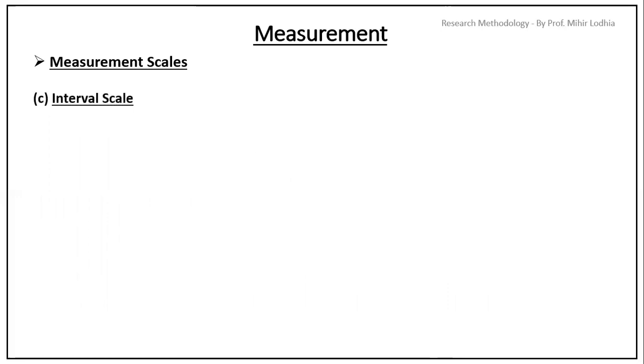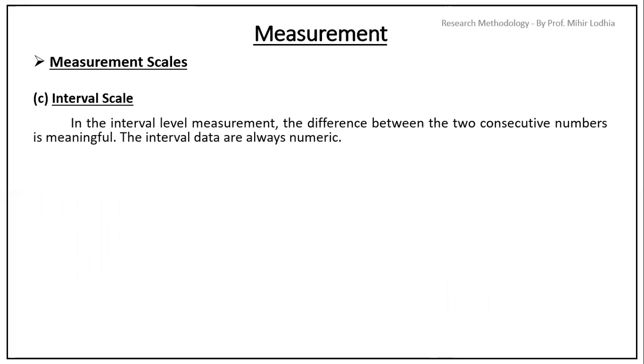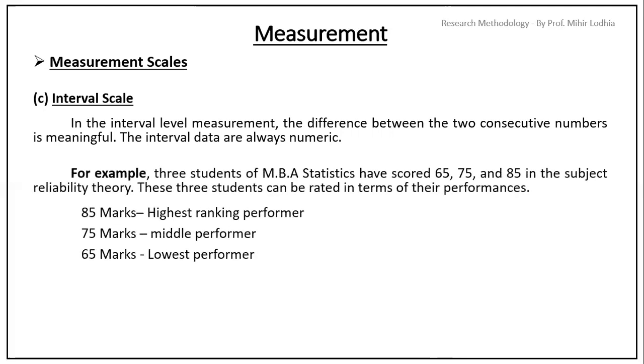Third, interval scale. In the interval level measurement, the difference between the two consecutive members is meaningful. The interval data are always numeric. For example, three students of MBA statistics have scored 65, 75, 85 in the subject reliability theory. These three students can be rated in terms of their performances. 85 marks, highest ranking performer. 75 marks, middle performer. 65 marks, lowest performer.